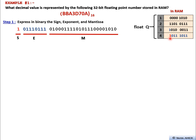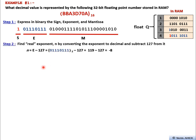The most significant bit stored in RAM represents the sign. Then we count eight bits — 0 1 1 1 0 1 1 1 — which represent the exponent. The remaining bits in black are the mantissa. This completes the first part.